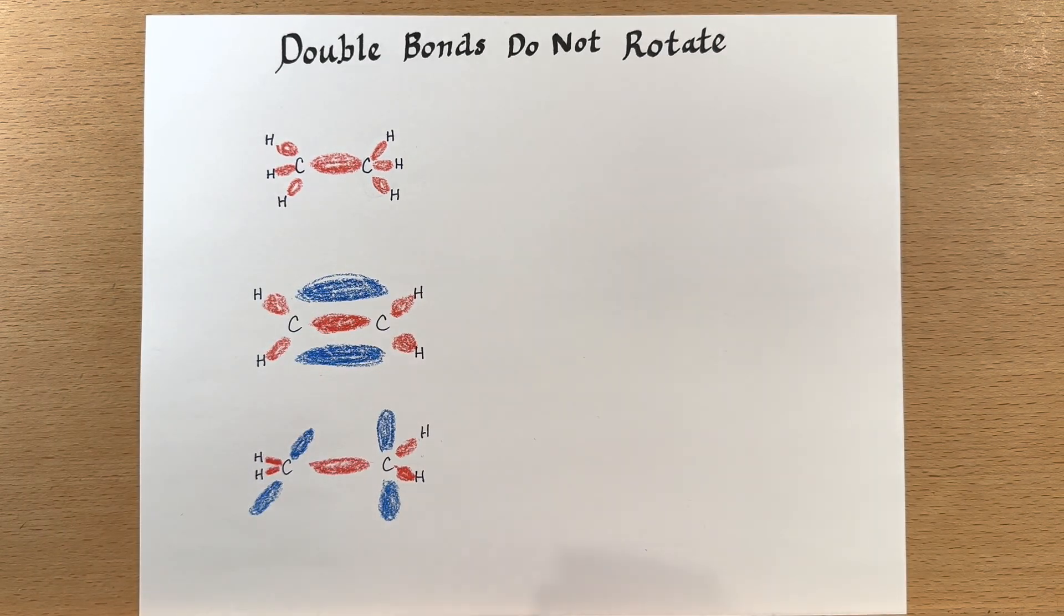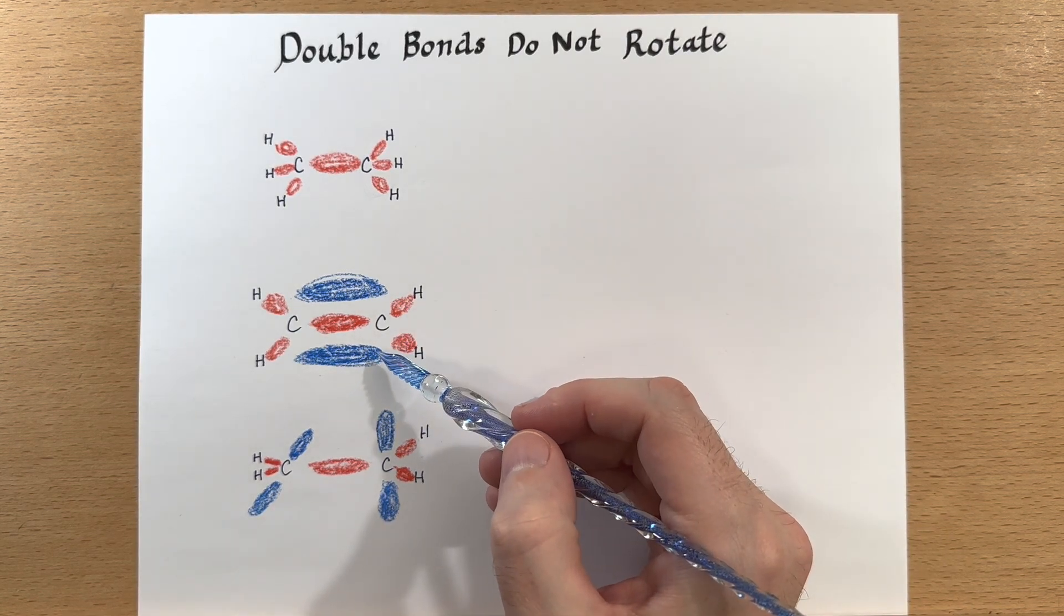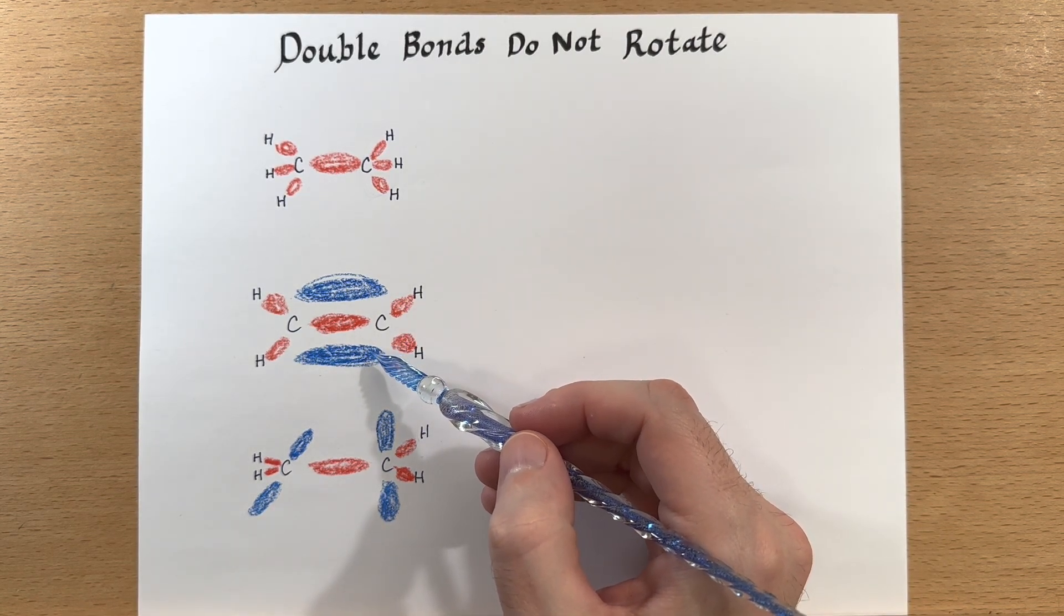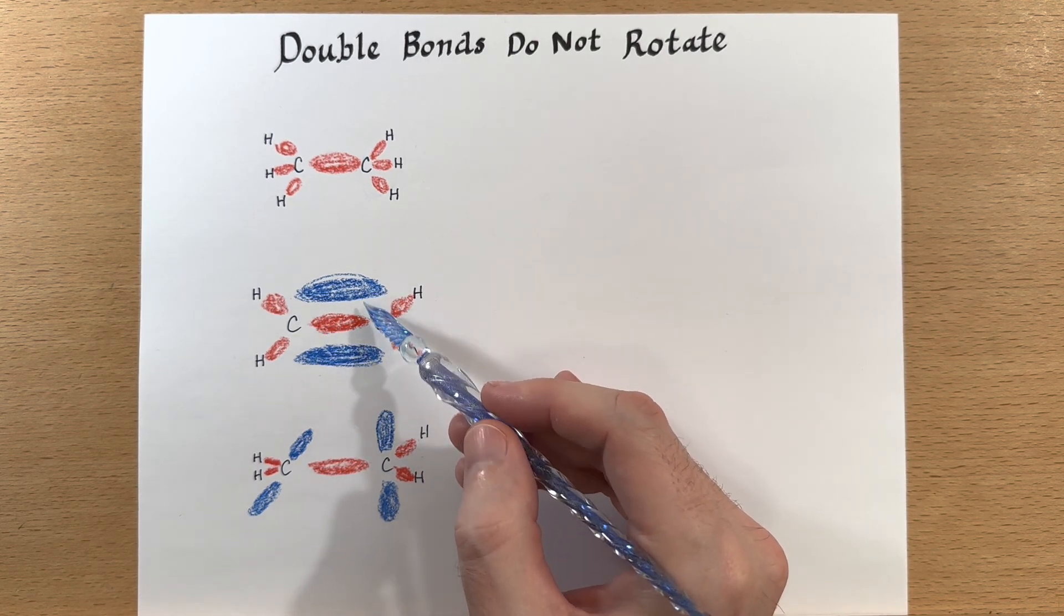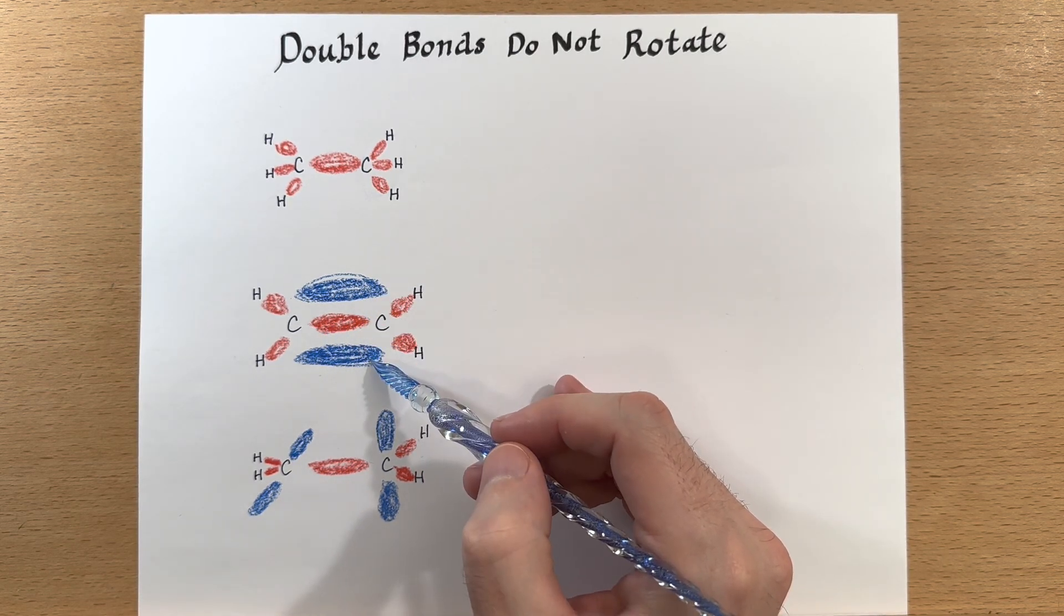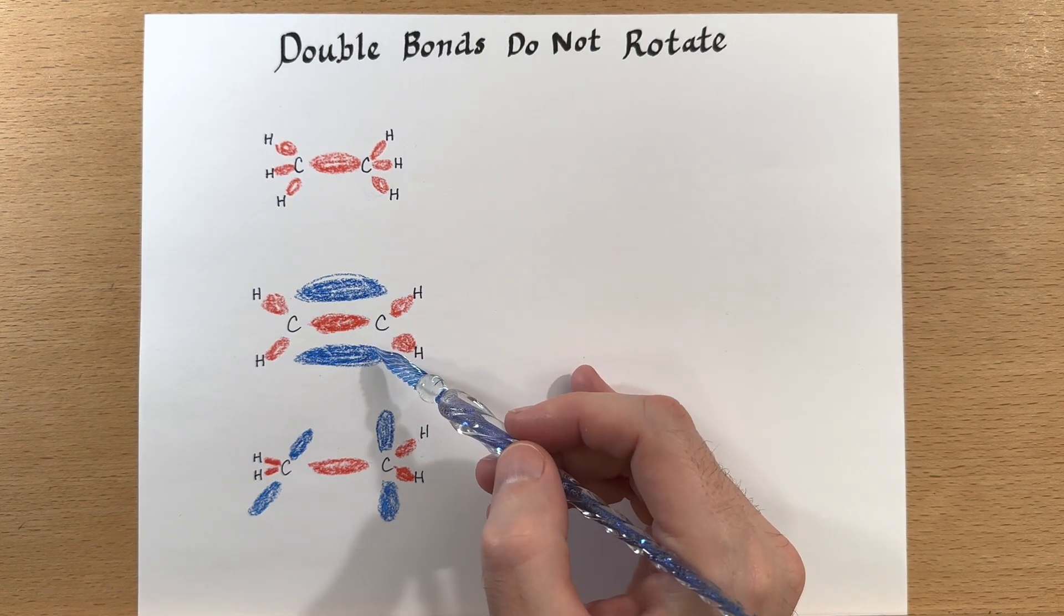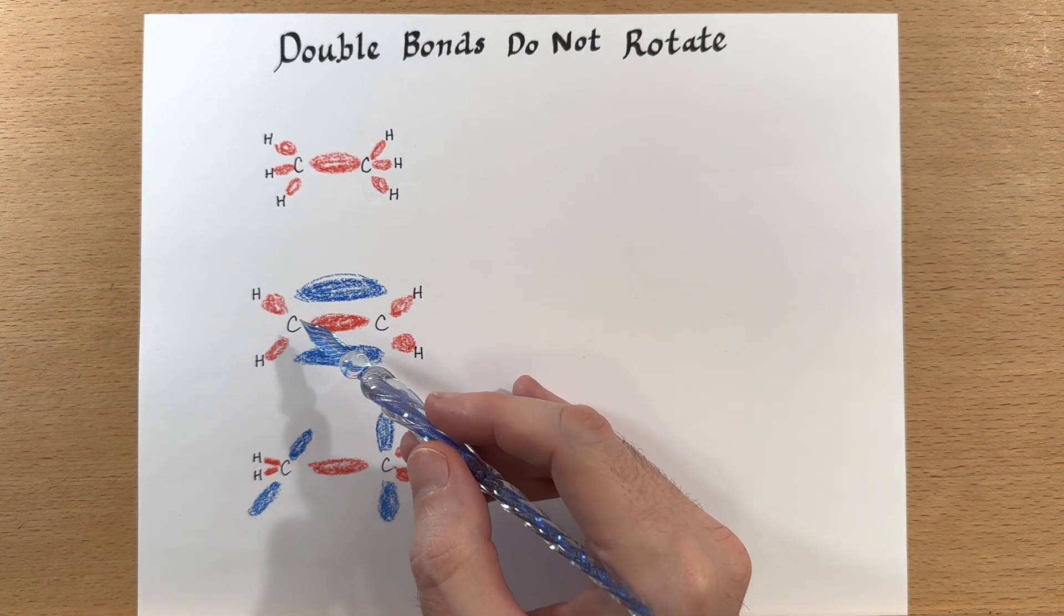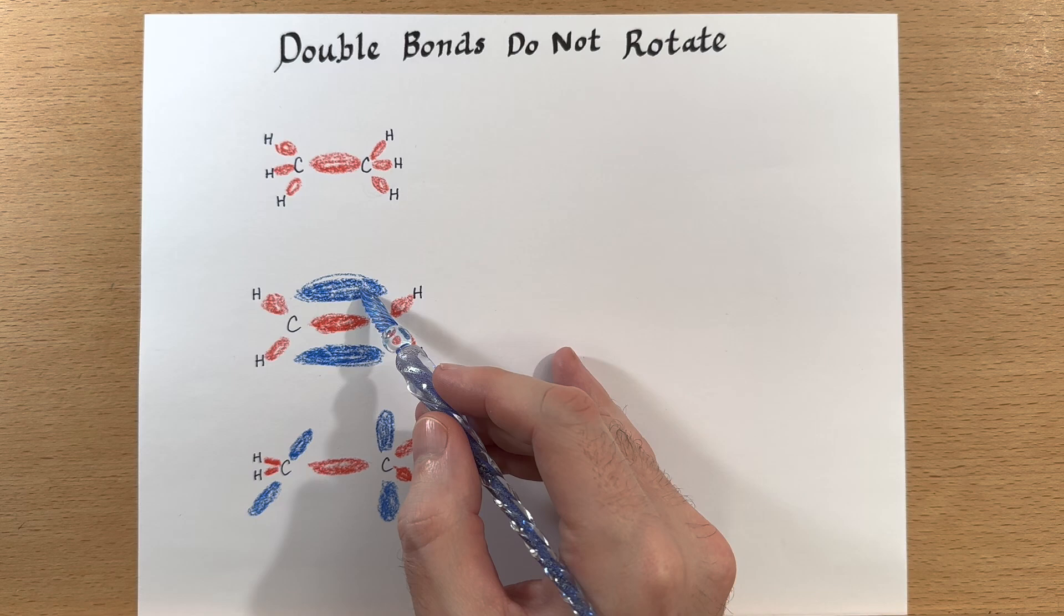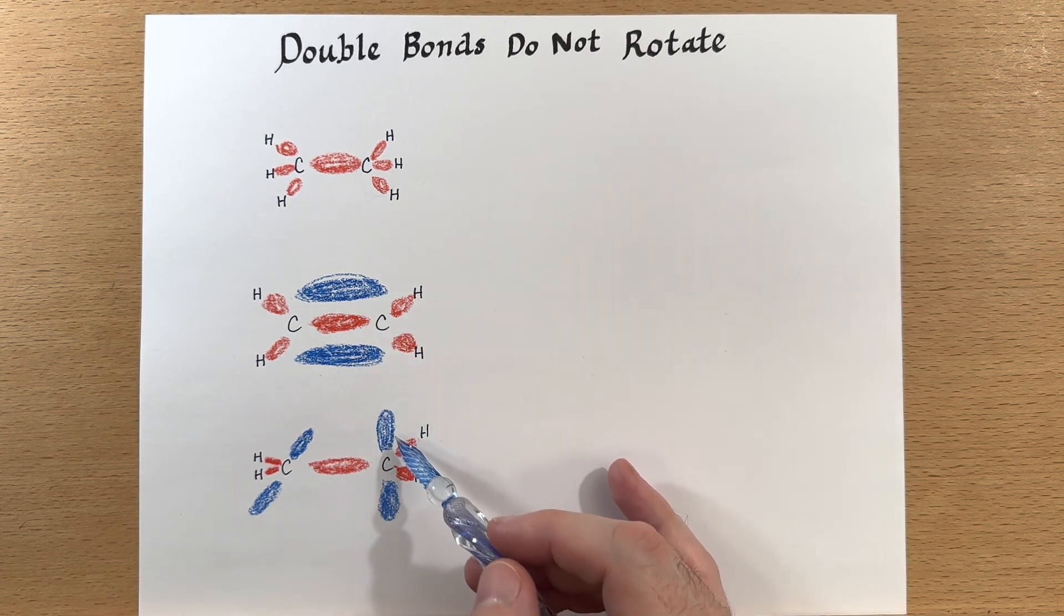Now if we look at a molecule that is not able to rotate like ethene which has a double bond, so a single bond in the middle plus a pi bond right here that's unable to rotate around the pi bond. We cannot spin these hydrogens while keeping those in place.